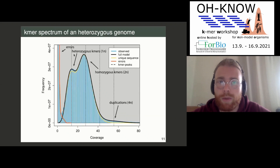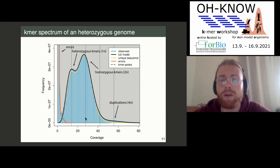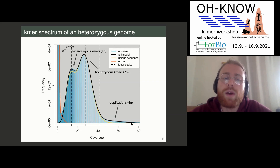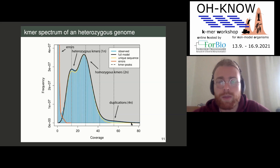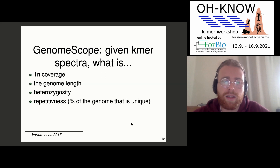Then it becomes more complicated when we have heterozygous k-mer spectra, but it's still quite a readable histogram. It's nothing that would really confuse us — just by looking, we quite know which peak is which. So these are the main genomes.